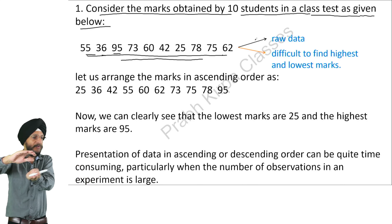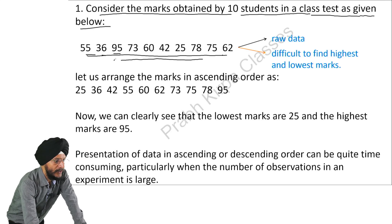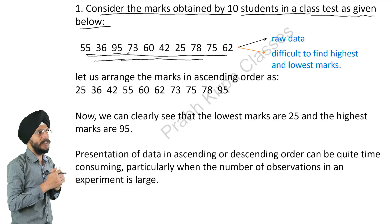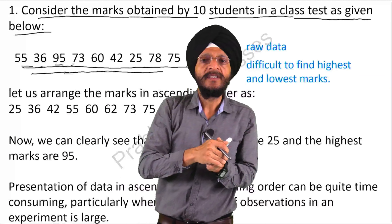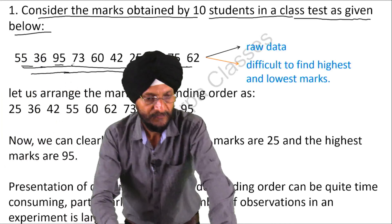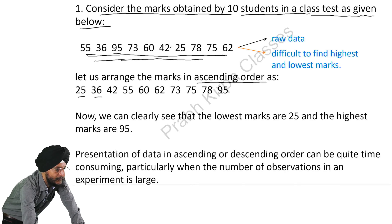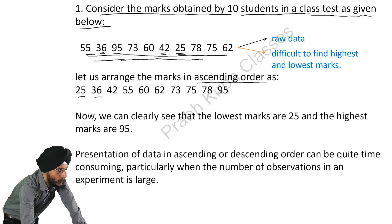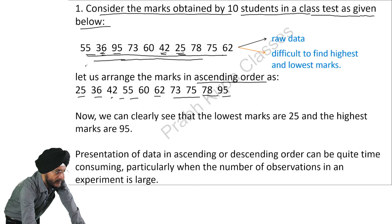From this raw data, it is difficult to find out which is the highest mark and which is the lowest mark. But if we rearrange this information in ascending or descending order, we can easily find out. Let us arrange the marks in ascending order. We observed that 25 are the lowest marks, then 36, then 42, and so on. Now we can easily say that the lowest marks are 25 and the highest marks are 95.